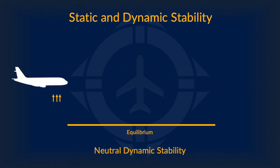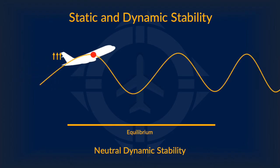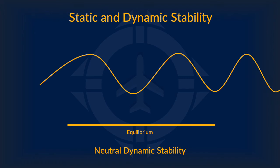Next up, we have neutral dynamic stability. Here is the approximate path a plane with neutral dynamic stability may follow. As one can see, the fluctuation magnitude doesn't change at all — theoretically, this means the airplane will fly on forever fluctuating at this exact magnitude and speed.